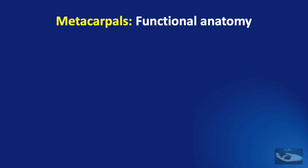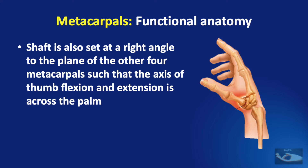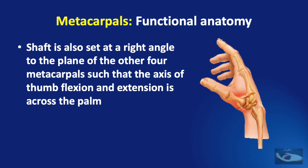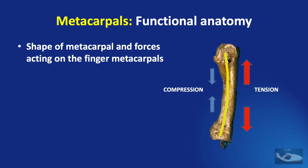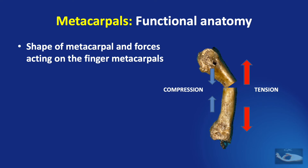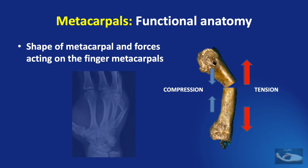In functional anatomy, the shaft of the first metacarpal is set at a right angle to the plane of the other four metacarpals, so the axis of thumb flexion and extension is across the palm. The metacarpal is slightly concave forward. On the flexor side, forces tend to compress; on the extensor side, forces provide tension. When a fracture occurs at this level, compression forces on the flexor side cause the distal fragment to tilt to the volar side — the characteristic position of a fractured metacarpal shaft.